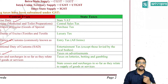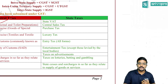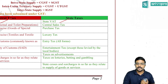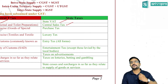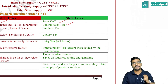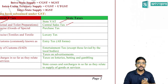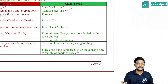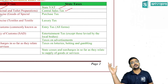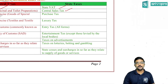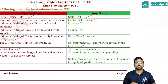State taxes subsumed under GST include: state VAT, which was levied when goods are sold within the state; central sales tax, which was levied when goods are sold outside the state — levied by central government but revenue went to state government. Entertainment tax levied by the state government is subsumed under GST, but if it is levied by the local government, it still continues. These are the taxes which have been subsumed under GST.